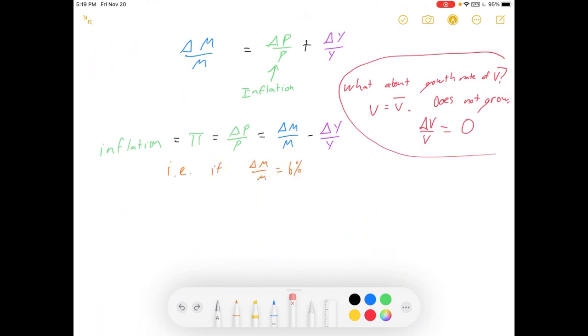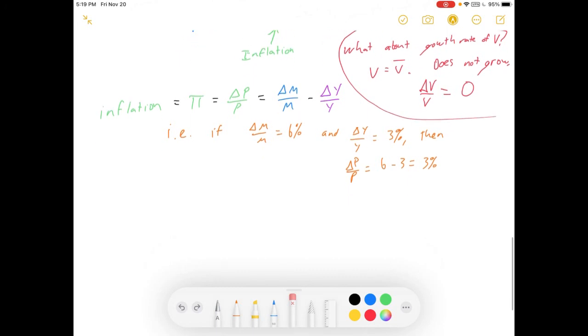So, here's an example for this. If your money supply is growing at 6%, and your real GDP is growing at 3%, then your inflation rate is predicted to be 6 minus 3, or 3%. It's a nice, simple prediction.